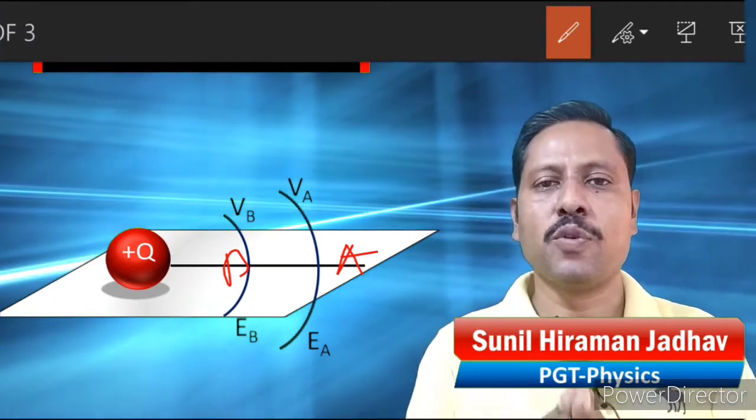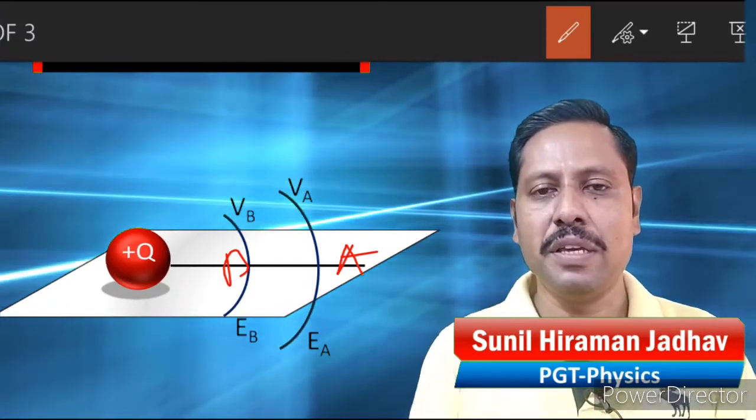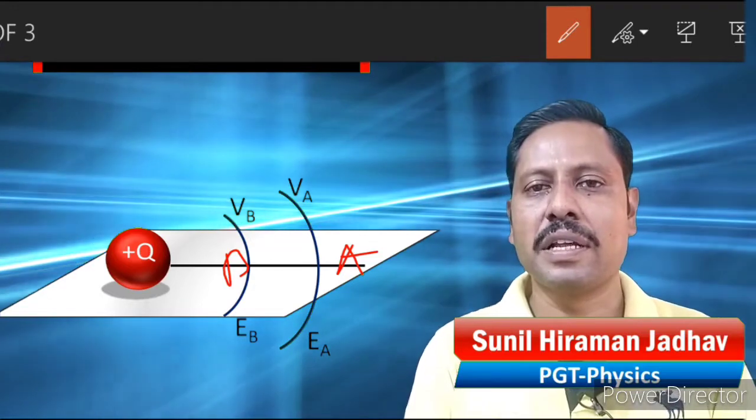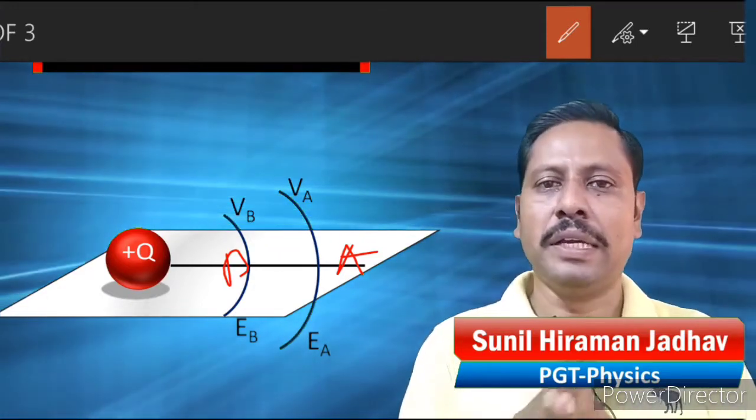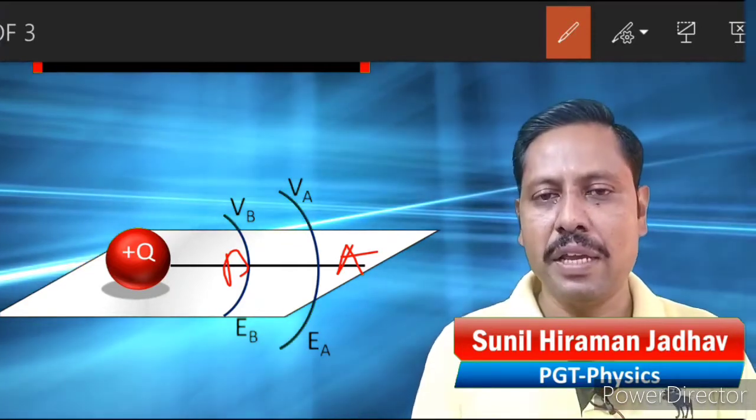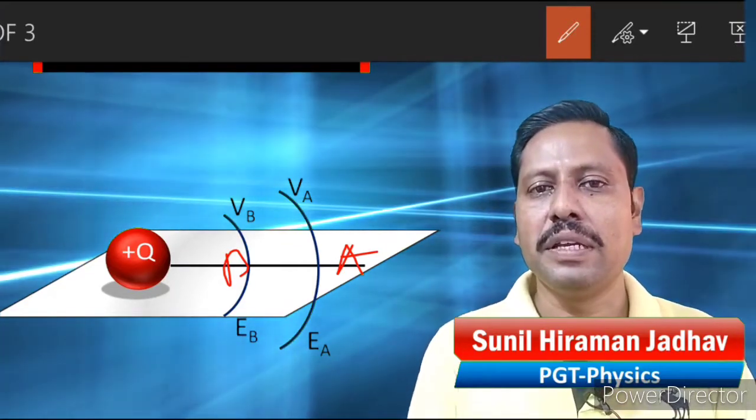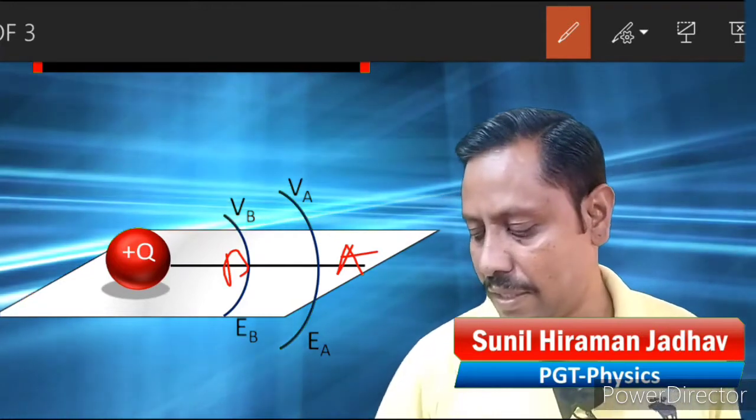I am labeling this as point B and this as point A. So at point B, suppose the electric potential is VB and electric field is EB. At point A, the electric potential is VA and electric field is EA.